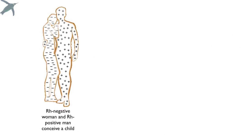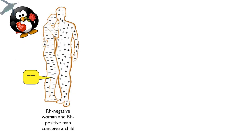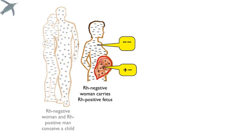The medical importance of this is shown here. If you have an RH negative woman and an RH positive man and they conceive a child — I made them both homozygous for their respective RH types. So she's homozygous recessive, he's homozygous dominant, and their fetus will be heterozygous. So now you have an RH negative woman carrying an RH positive fetus.